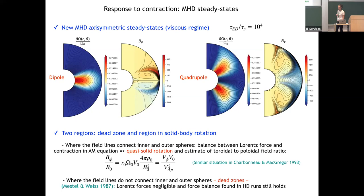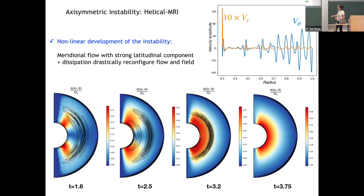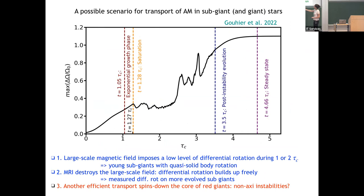Our argument is that this is a scenario to explain the sub-giant phase where you have mostly solid-body rotation or differential rotation localized in small regions with closed field lines. The MRI kills the large-scale magnetic field structure and allows contraction to spin up the core and spin down the envelope. We do not yet explain the red giant branch behavior where core rotation remains roughly constant despite continued contraction — possibly non-axisymmetric instabilities such as the Tayler instability or a non-axisymmetric MRI would play a role there.